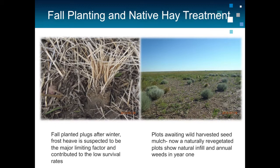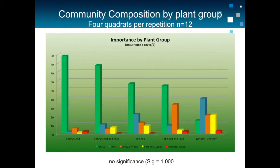That's why you see lots of pasture sage and weeds at the beginning. But when we went back to the site in 2013 and 2014, we looked at plant cover and found no significant difference among the treatments, though it differed among grasses, forbs, and weeds. Spring was doing better, but the differences between the different treatments were not statistically significant.